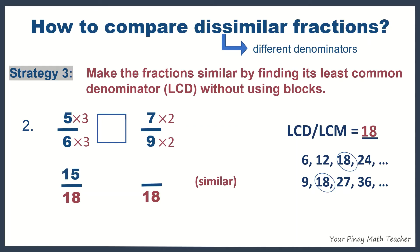Multiply also 7 by 2. So, 5 times 3 is 15, 7 times 2 is 14. So, we have 15 eighteenths, 14 eighteenths. They are now similar. Since 15 eighteenths is greater than 14 eighteenths, then 5 sixths is greater than 7 ninths.